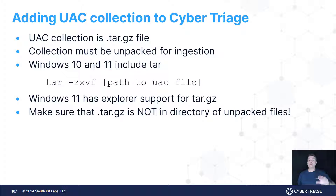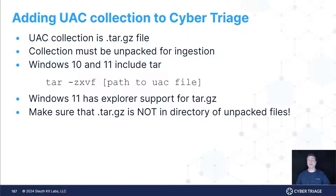The arguments for the tar command: Z to deal with a compressed image, X to extract, V for verbose, and F is for file — telling it to process a file — and then you give it the path to the file that you want to extract. We'll go through that in the demo shortly.